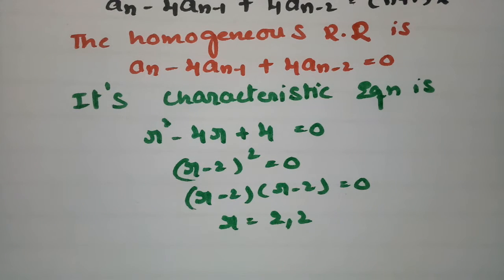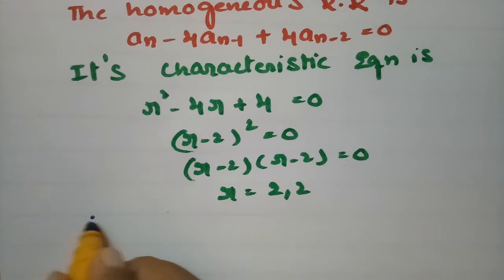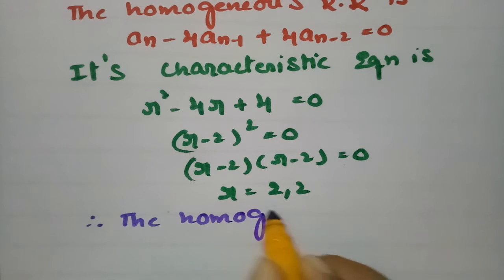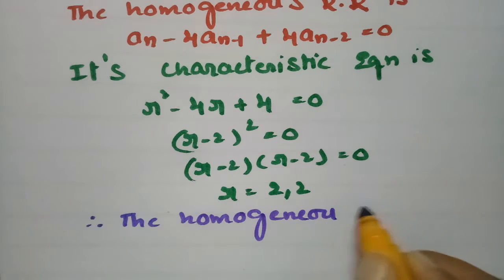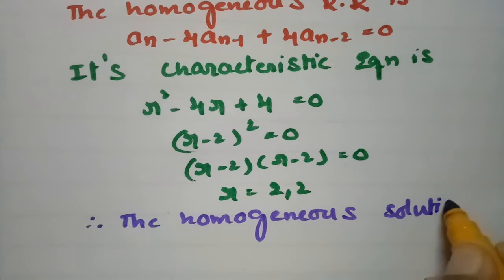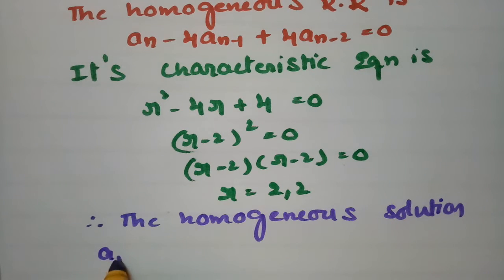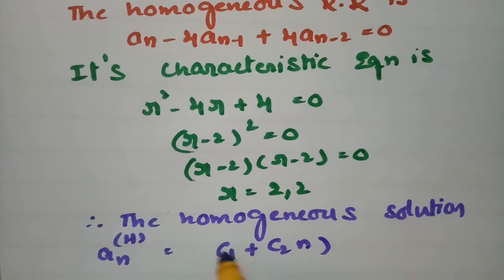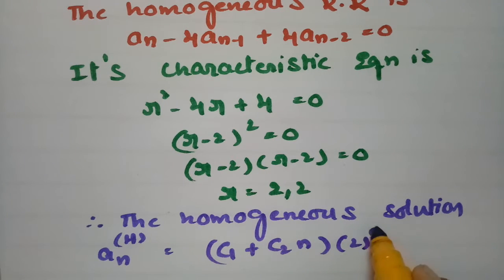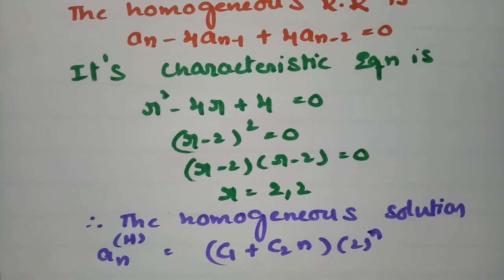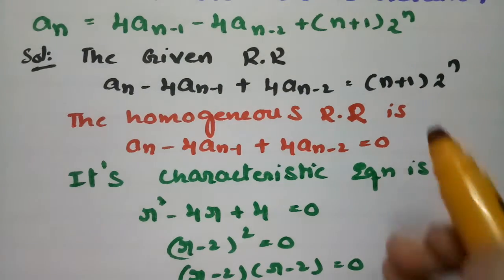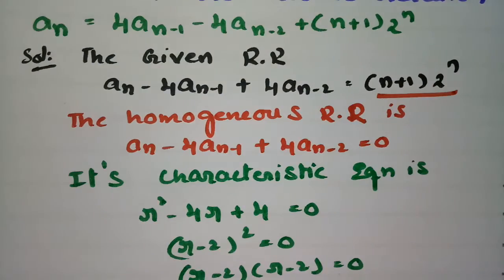Now, how to write the solution? The homogeneous solution An(H) is, since these are equal roots: An(H) = (C1 + C2·N)·2^N. The RHS is (N+1)·2^N.